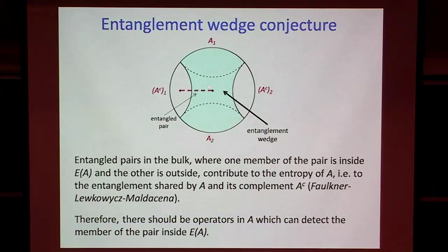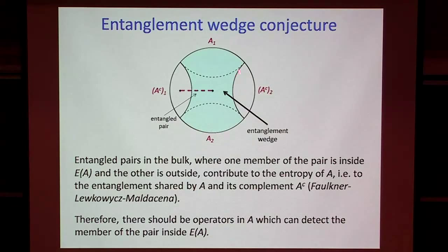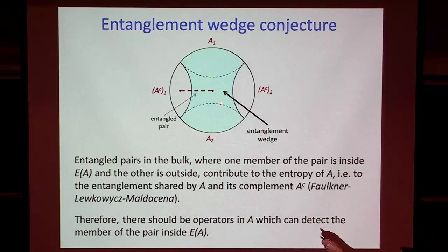One reason for claiming that operators in the entanglement wedge should be reconstructable is this: we can imagine having entangled pairs in the bulk where one member of the pair is within the entanglement wedge and the other is outside. It has been argued that that entanglement in the bulk should contribute to the entanglement between region A on the boundary and its complement, and if that entanglement on the boundary has some operational meaning, then there should be an operator in region A which acts non-trivially on the member of the pair contained in the entanglement wedge.